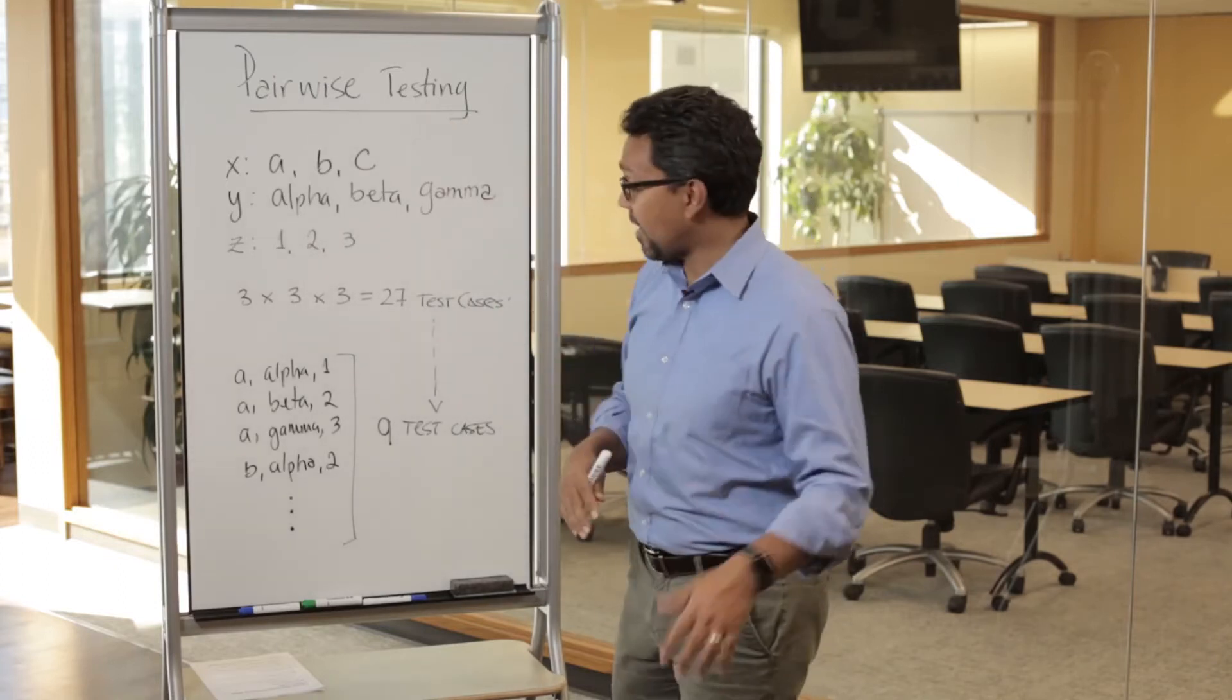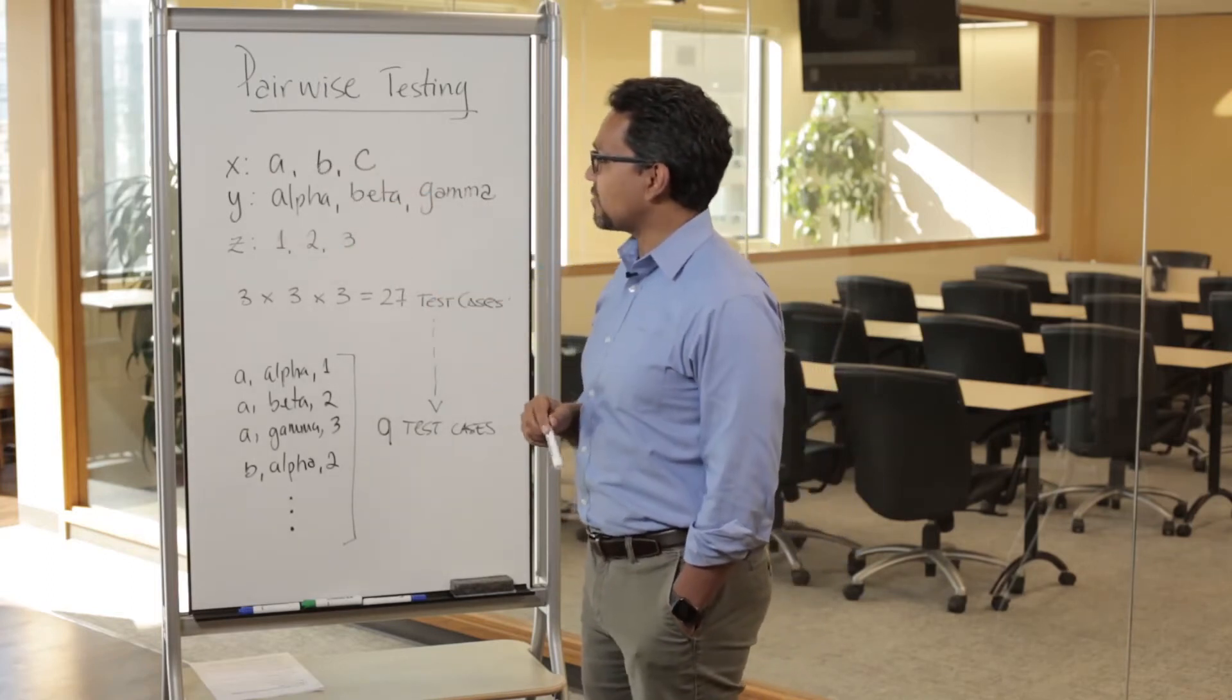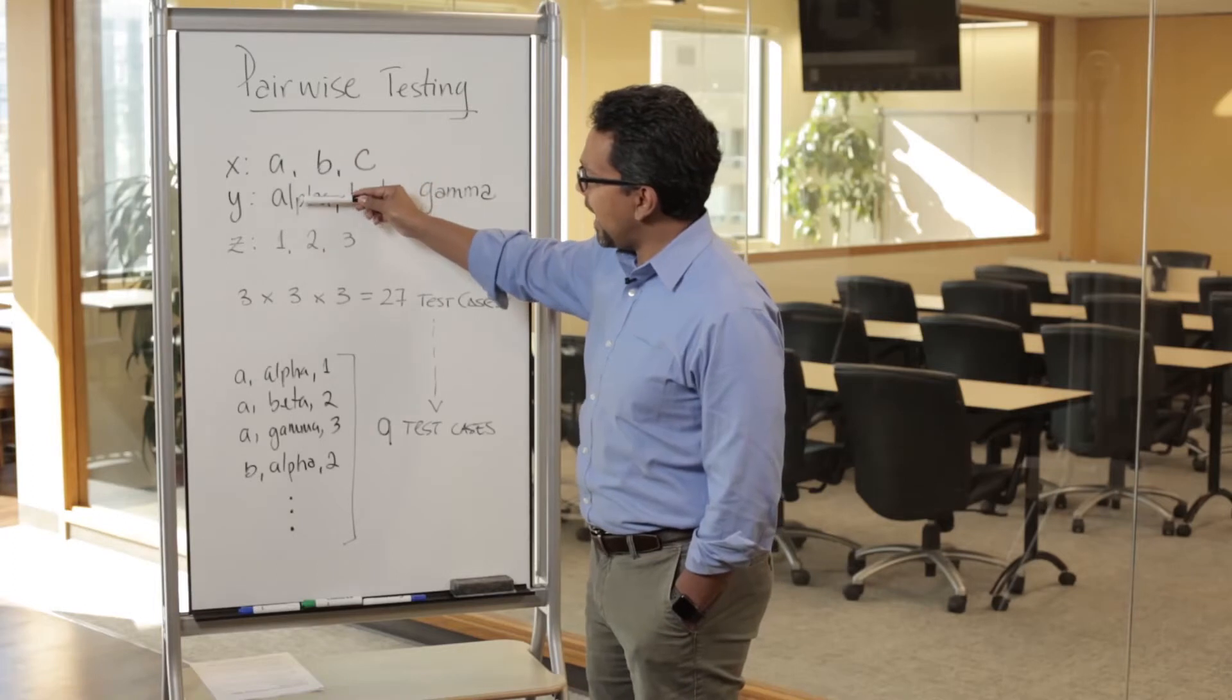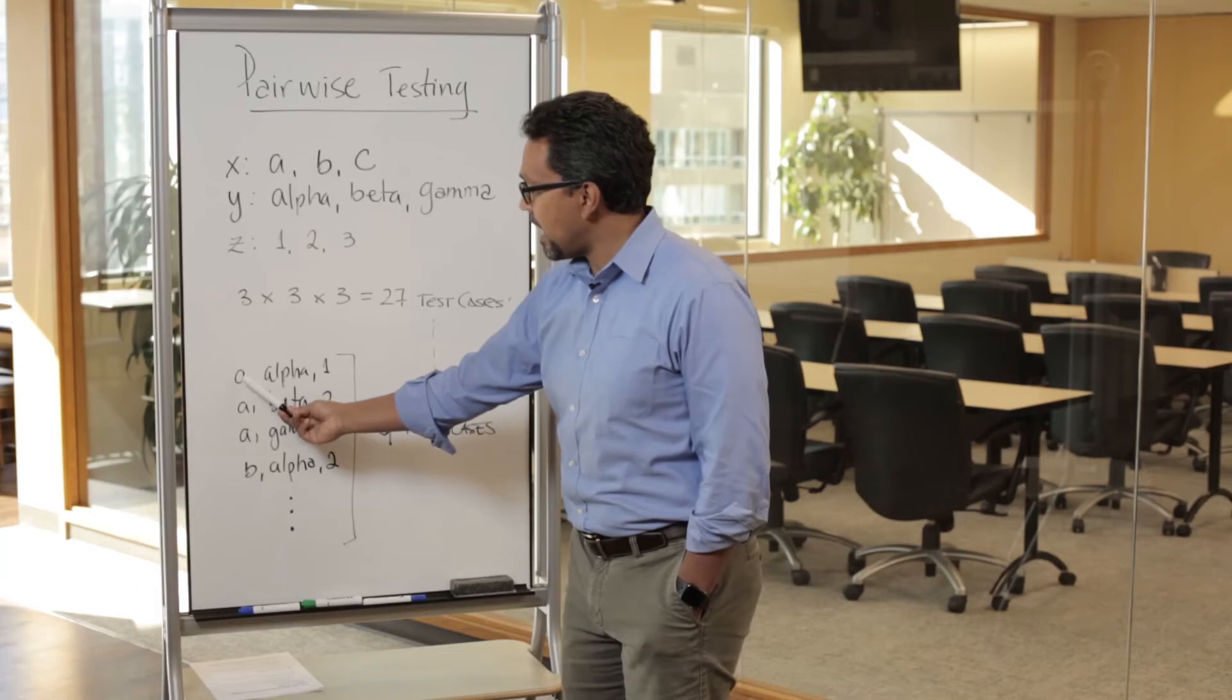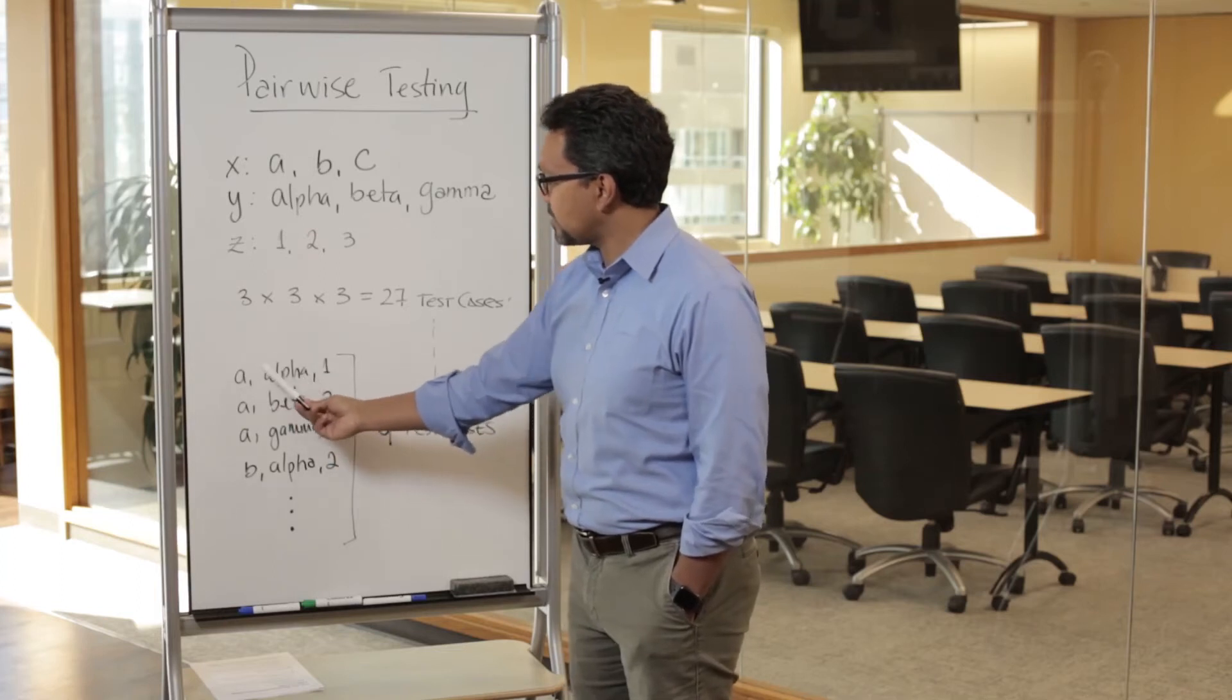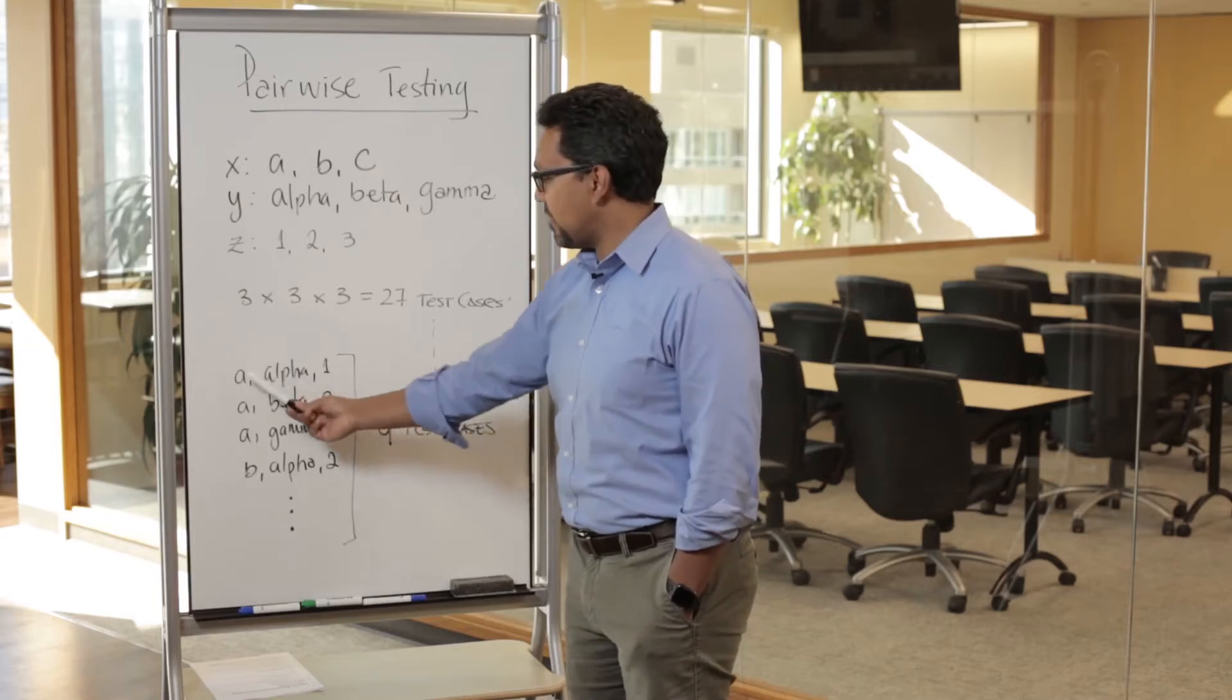What we can do is start combining this factor, so I can have alpha and one. That could be one test case here. I'm testing the pairs of A and one, I'm testing the pairs of A and alpha, I'm testing also alpha and one.